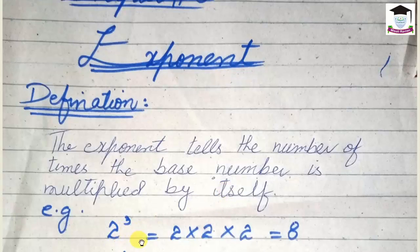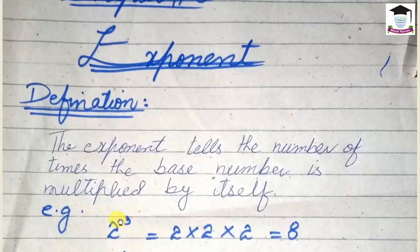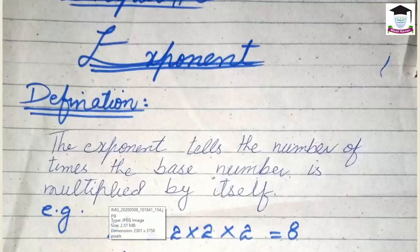For example, 2 power 3 is equal to 2 multiplied by 2 multiplied by 2, which equals 8. In 2 power 3, there are two components: one is the base and the second is the power. Here 2 is the base and 3 is the exponent. So 2 power 3 is its exponent form, meaning we multiply 2 three times to get 8.